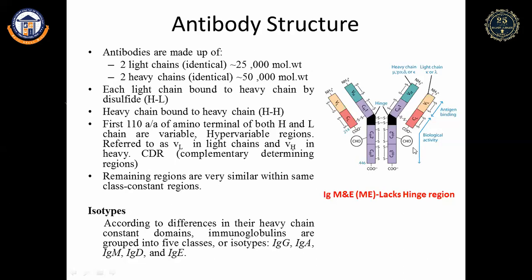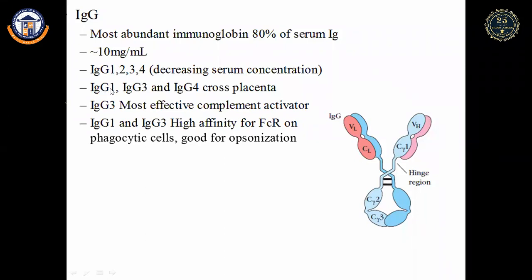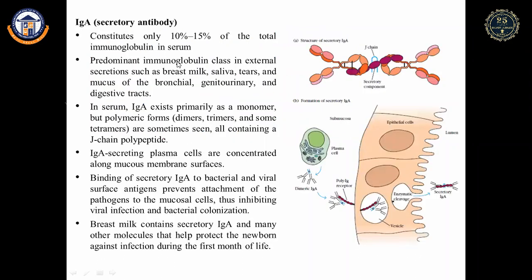IgG is the most abundant immunoglobulin, comprising 80% of serum immunoglobulin. It has four subclasses — IgG1, IgG2, IgG3, and IgG4 — based on decreasing serum concentration. IgG1, 3, and 4 cross the placenta. IgG3 is the most effective complement activator. IgG1 and IgG3 have high affinity for Fc receptors on phagocytic cells and are good opsonins.